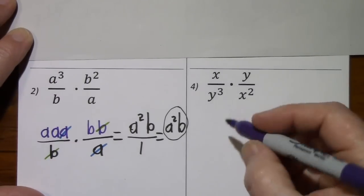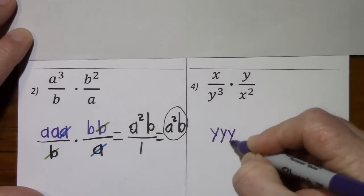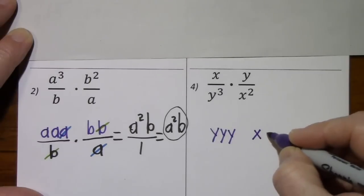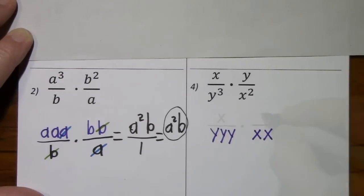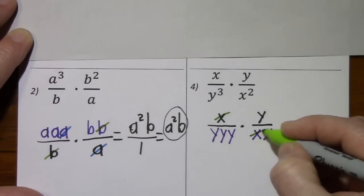Looking at the next problem. y to the third is y times y times y. x squared is x times x.